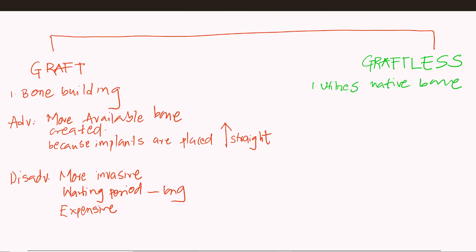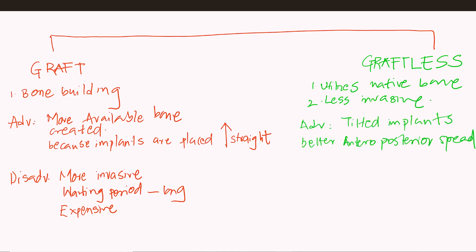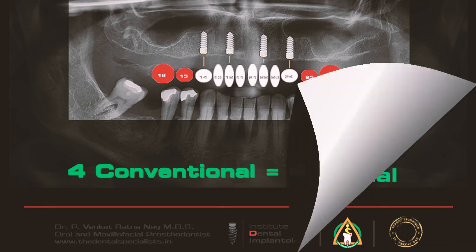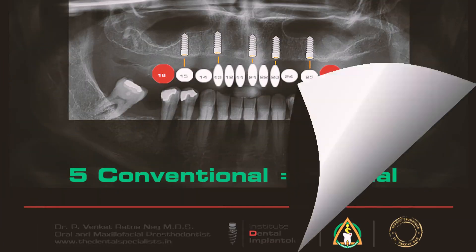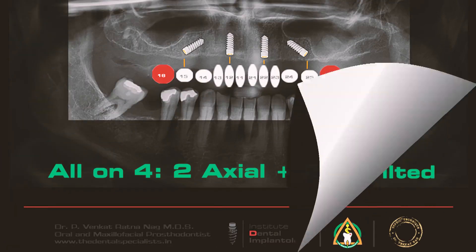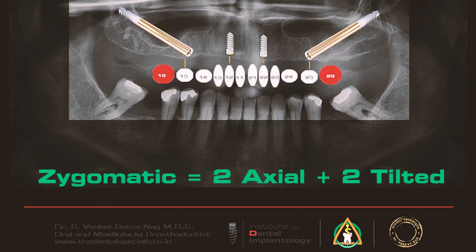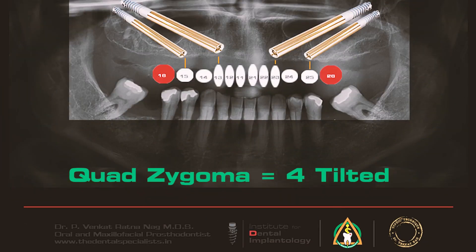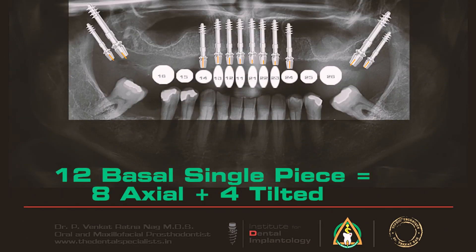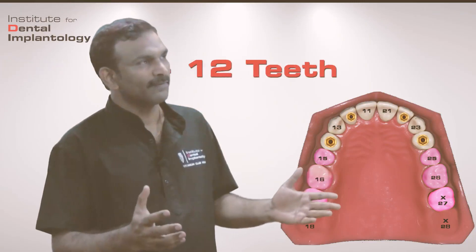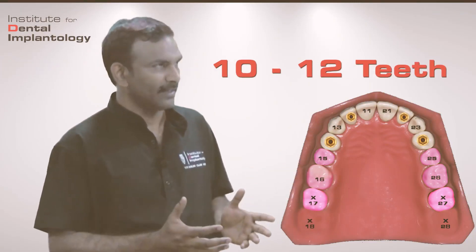The graftless believers believe in the theory of utilizing the native bone, avoiding invasive surgeries. But according to me, the main disadvantage of graftless solutions is, as a prosthodontist, the biomechanical failures like cantilevers. And the second major disadvantage is we are able to give just 10 to 12 teeth.